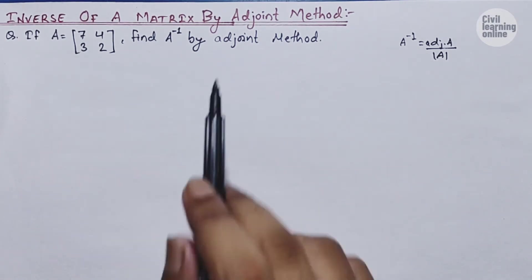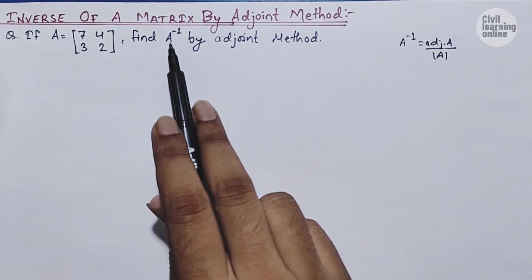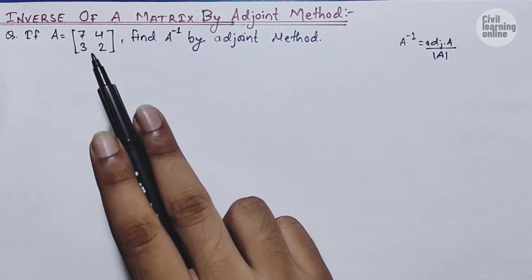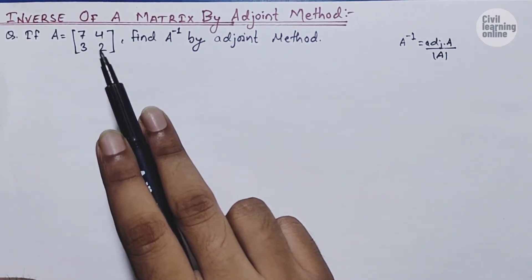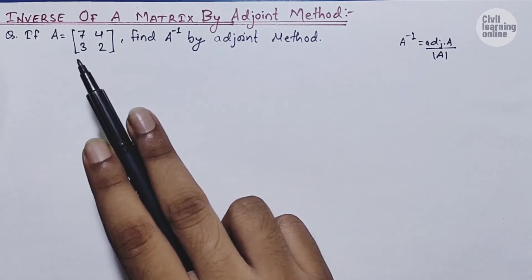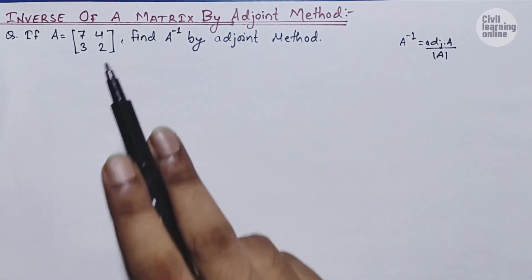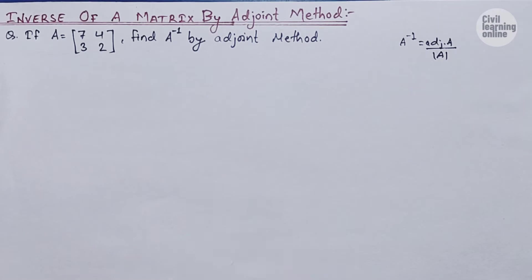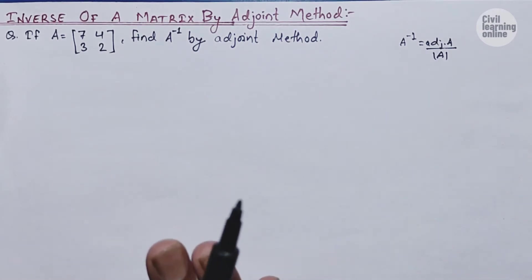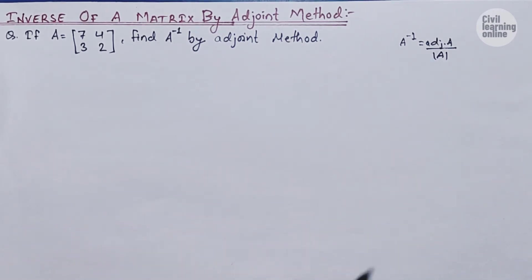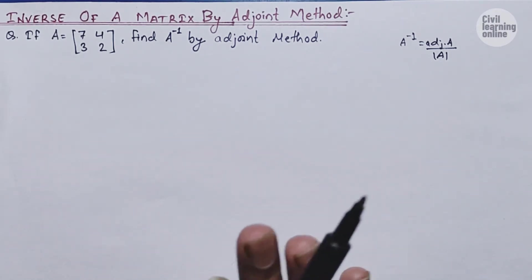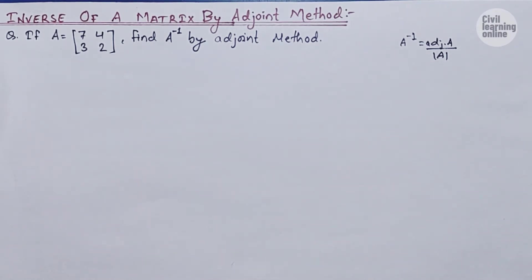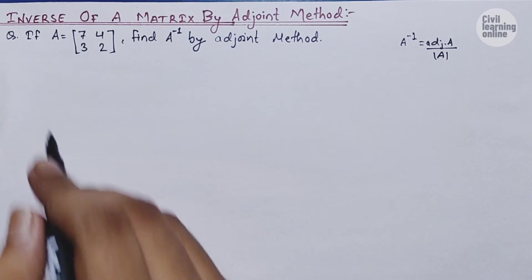Before finding A inverse, we need to first find the determinant so that we know whether it is a singular or non-singular matrix. Whenever in an exam you are asked to calculate A inverse, it is certain that the matrix will be non-singular. So let us find the determinant of this matrix and then we will find A inverse.